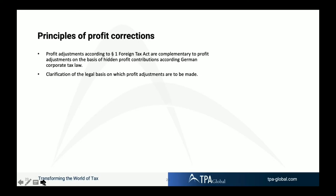Another important element is the principles of profit corrections in Germany. These are now placed in a clear sequence. There was previously a conflict between profit adjustments according to paragraph 1 of the foreign tax act and profit corrections based on hidden profit contributions according to German corporate tax law — that was not 100% clear in the past. Now it is clearly expressed: the foreign tax act is complementary and leads, while the other regulation on profit contributions under German corporate tax law follows.